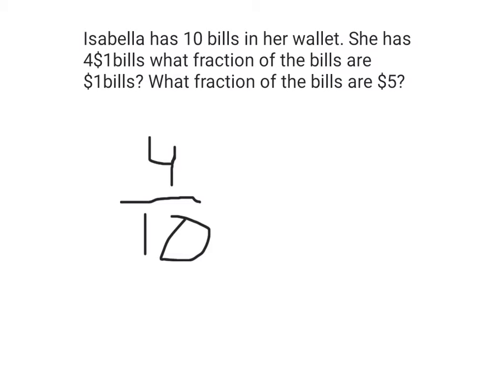There are also $5 bills, and there are four $1 bills. So now we have to solve 10 minus 4, which equals 6. So that equals 6 $5 bills, and that is the answer to this problem.